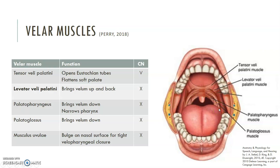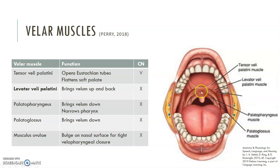We also have the musculus uvulae — what you actually see as the uvula is just a little extra portion of this muscle. When looking in the mouth, we see the back of the pharyngeal wall. We're really looking for how this area lifts during speech. We can't see whether we have adequate pharyngeal closure from this view, but we can see if the velum is moving — because if it's not moving on the oral side, it's likely not moving on the nasal side either.